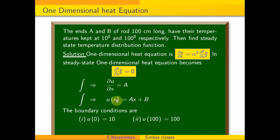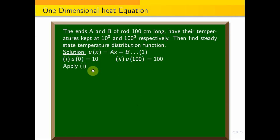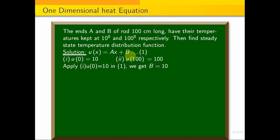We apply the boundary conditions to find a and b. Applying the first condition: u(0) = 10 in equation 1. Substituting x = 0, we get b = 10. So u(x) = ax + 10.